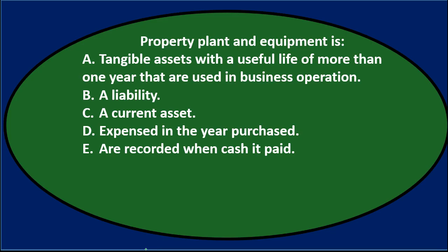First question. Property, plant, and equipment is: A. Tangible assets with a useful life of more than one year that are used in business operations. B. A liability. C. A current asset. D. Expensed in the year purchased. Or E. Are recorded when cash is paid.